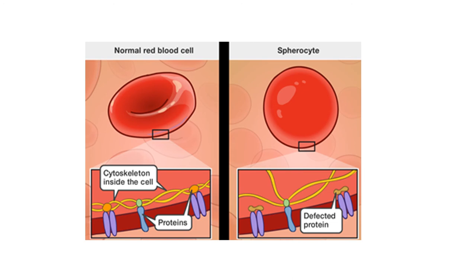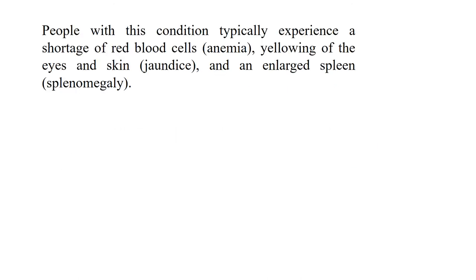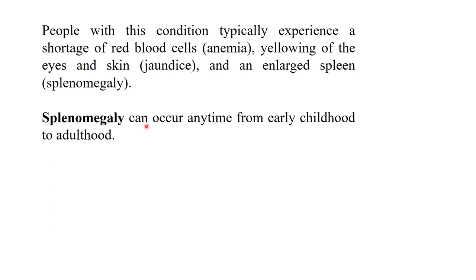Hereditary spherocytosis is caused by molecular defects in genes that code for red blood cell proteins: spectrin alpha and beta, ankyrin, band 3 protein, and other red blood cell membrane proteins. People with this condition typically experience a shortage of red blood cells (anemia), yellowing of the eyes and skin (jaundice), and an enlarged spleen (splenomegaly). Splenomegaly can occur anytime from early childhood to adulthood.